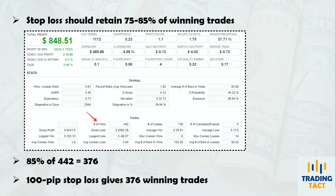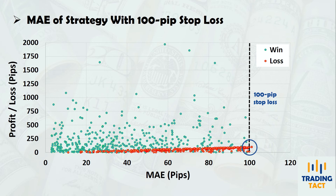Here's how the MAE chart looks with a 100 pip stop. There is a concentration of losses at the 100 pip MAE value where the trades are taken out by the stop loss. Many trades actually have a MAE of 101 pips because my backtest models a 1 pip slippage. In actual trading, during times of extreme volatility, stop loss slippage can increase dramatically.